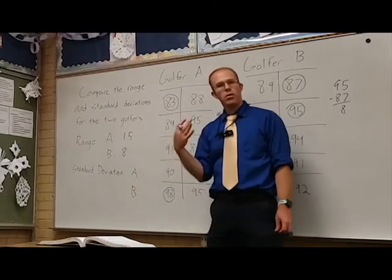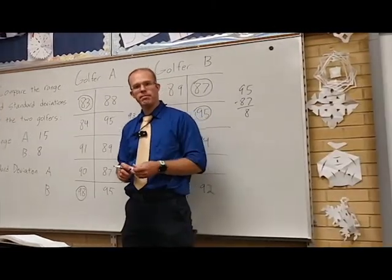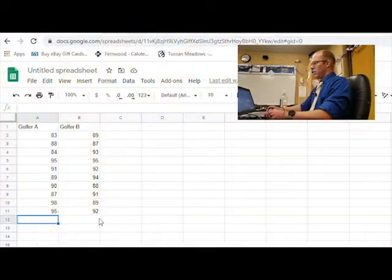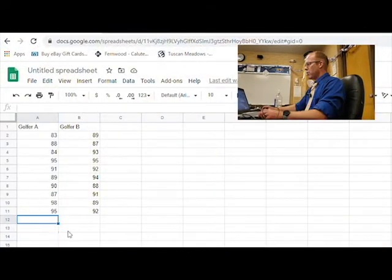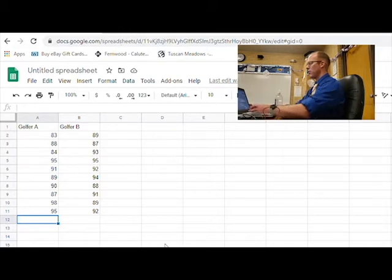Standard deviation we're going to do on the computer so let's head on over there. You can see here I've typed in the scores for both golfers, golfer A in this column and golfer B in that column. I'm going to get Google Sheets to do the standard deviation for both of these.